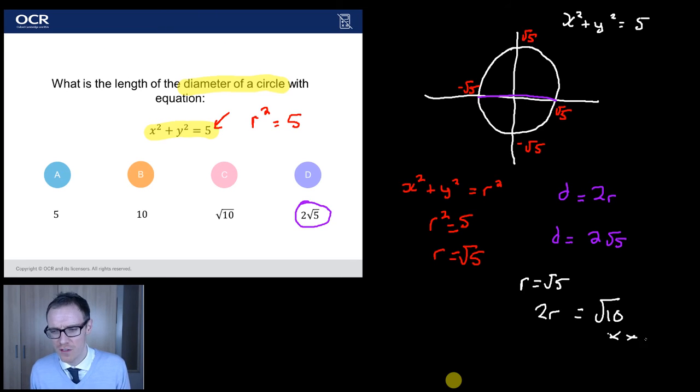No, no, no. You've got to know your rules of surds. Two lots of root 5 is two root 5. You can't combine surds in that way. If it helps, think of it as this way. Two lots of root 5 is root 5 plus root 5. Imagine it was like X plus X. That's just 2X, right? So, root 5 plus root 5 is just two root 5. So, be careful with that. That's not a mistake with circles. That's a mistake with surds.